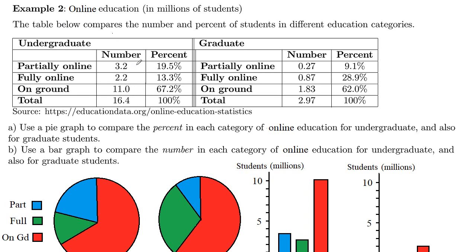The numbers were 3.2 million, 2.2 million, and 11 million respectively, for a total of 16.4 million. The partially online 3.2 million is 19.5%, the 2.2 million is 13.3%, and the on-ground 11 million is 67.2% of the total 100%.